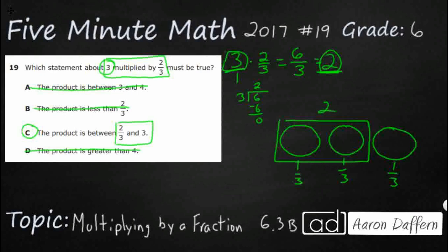Here's an interesting rule: when your fraction is between 0 and 1, your product is smaller. If the fraction is greater than 1, then you will still get a larger number than your first factor. So if your fraction is between 0 and 1, your product is smaller. And the same thing works with decimals.